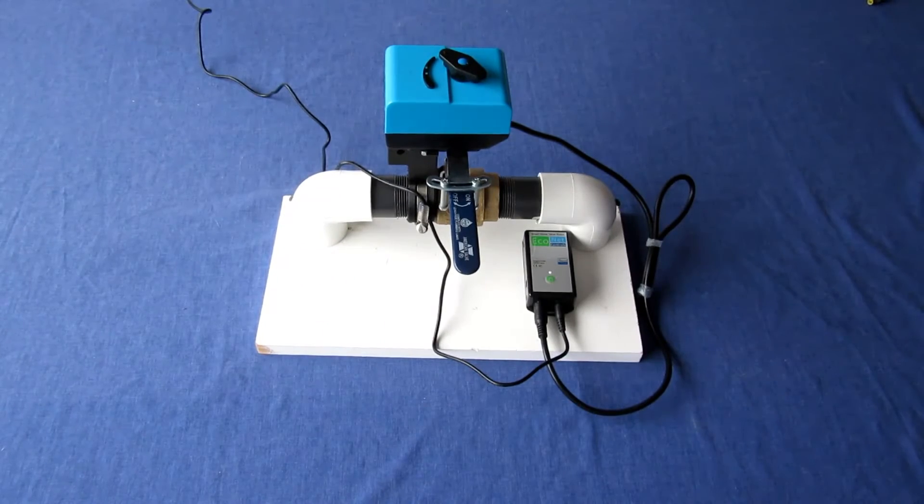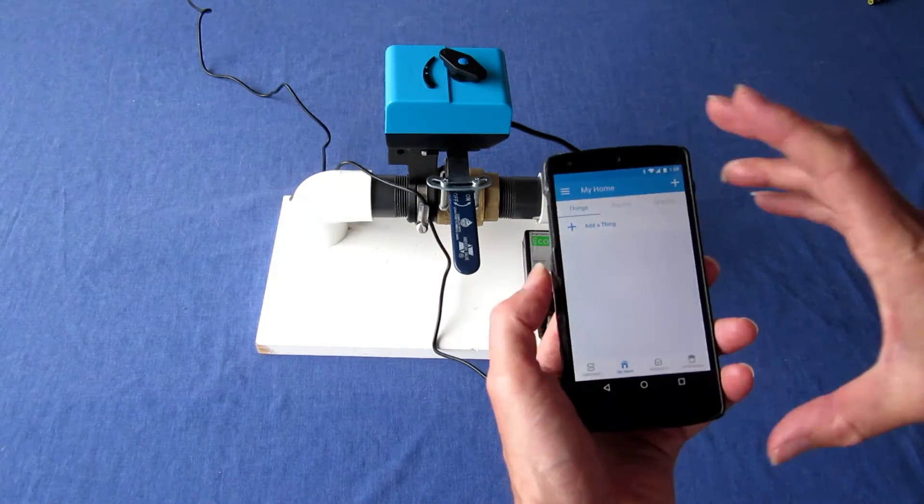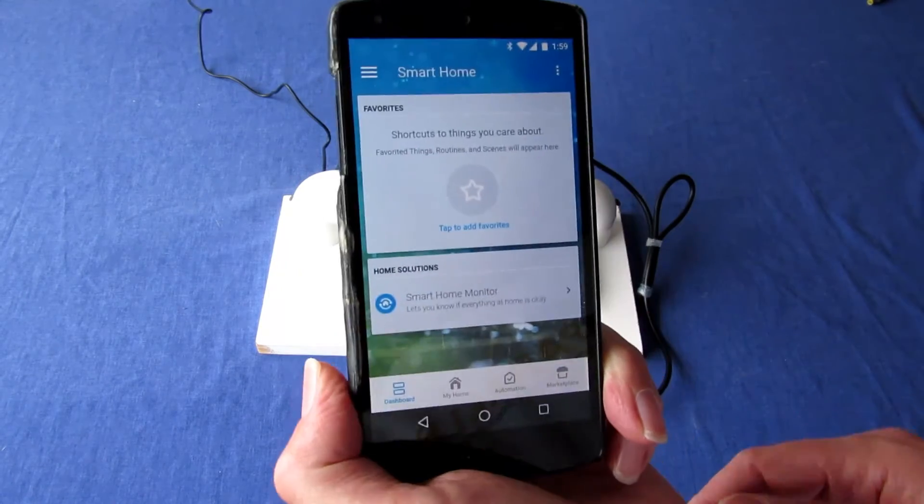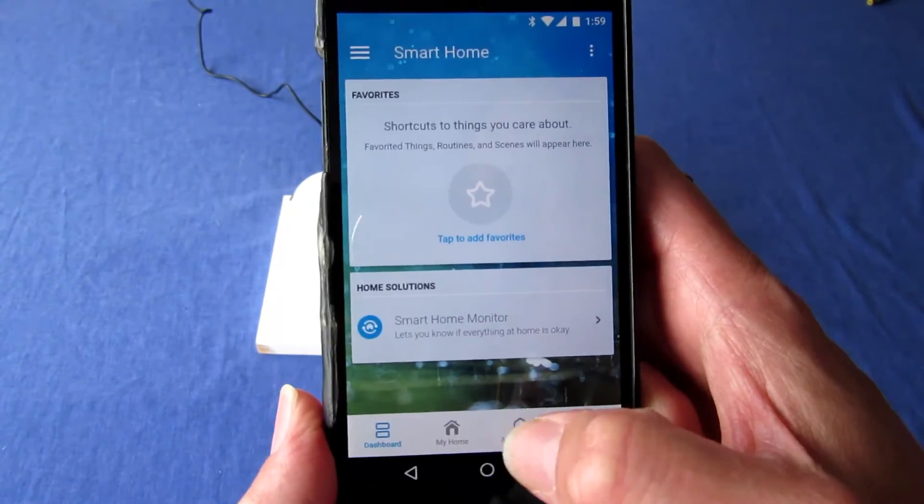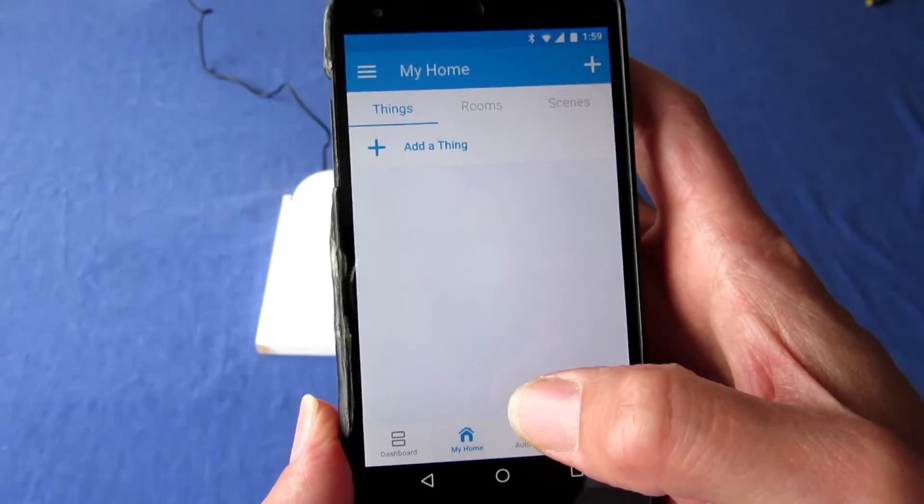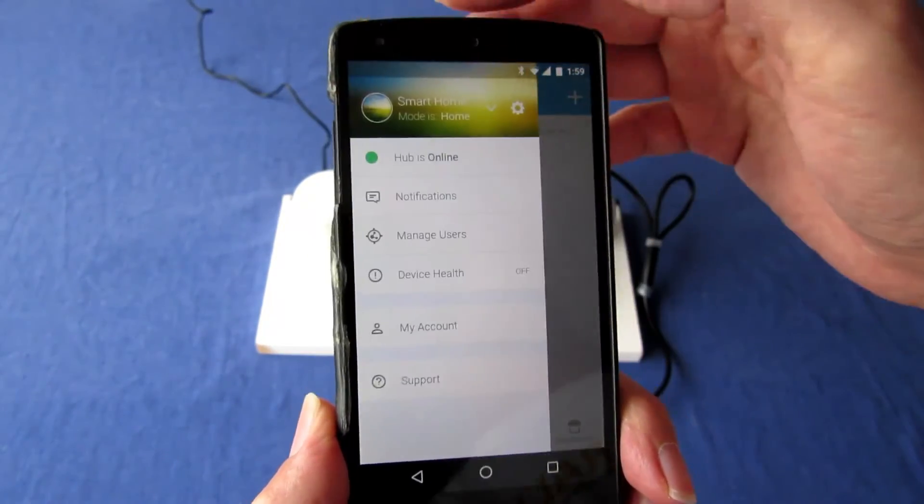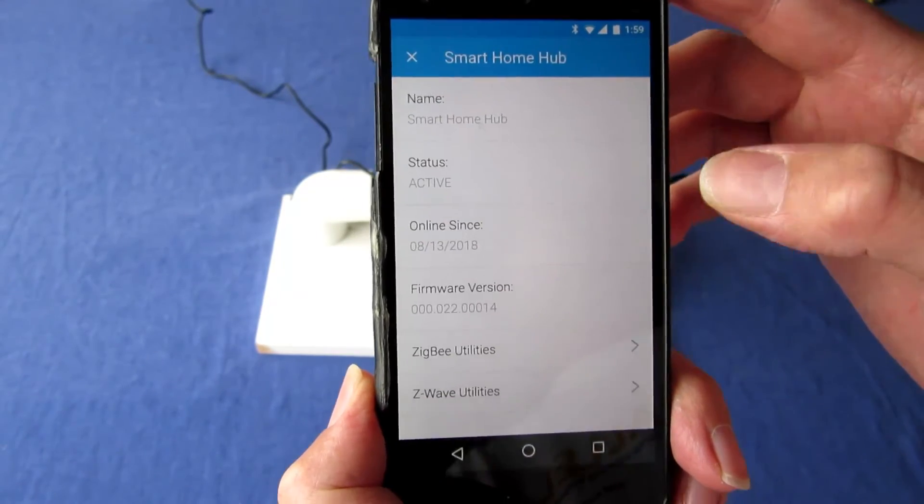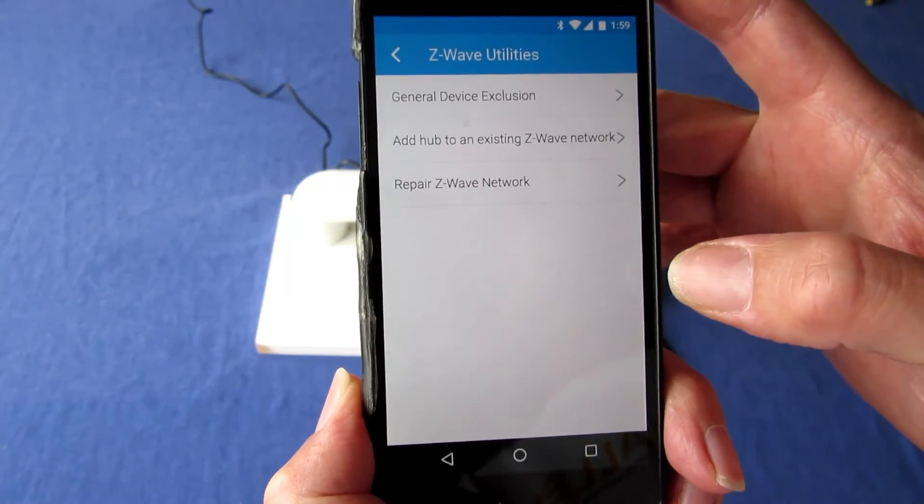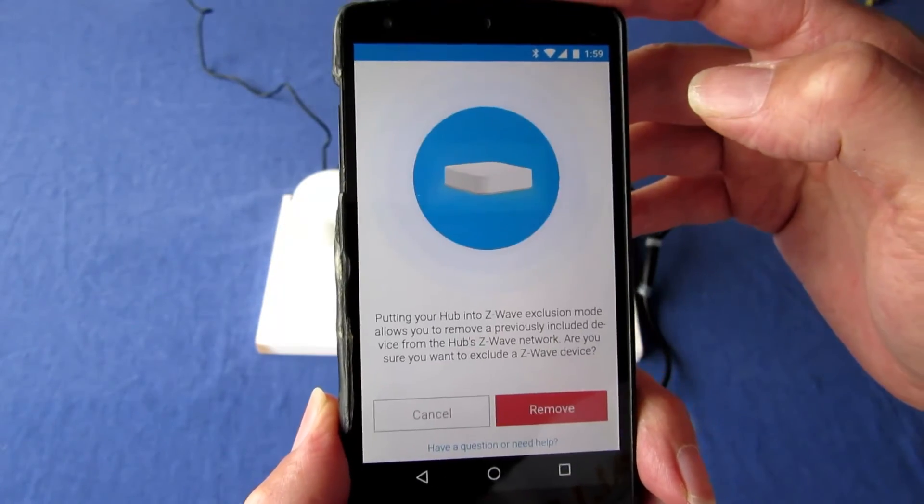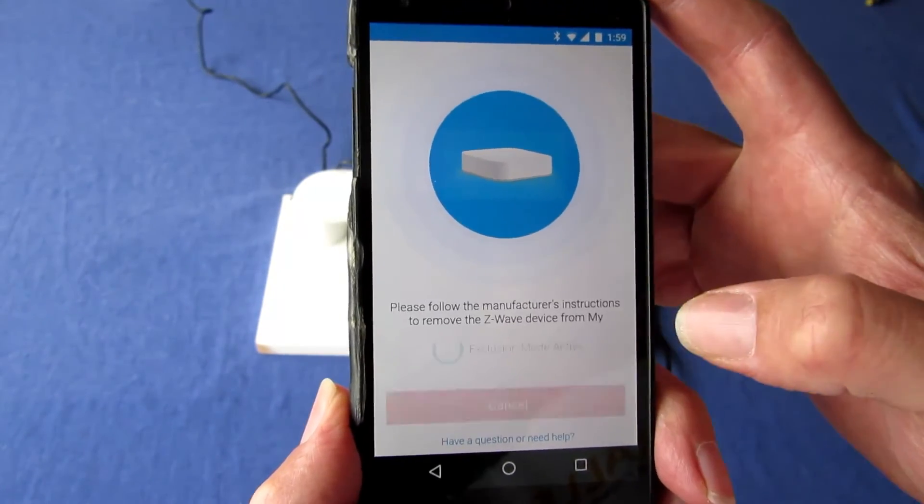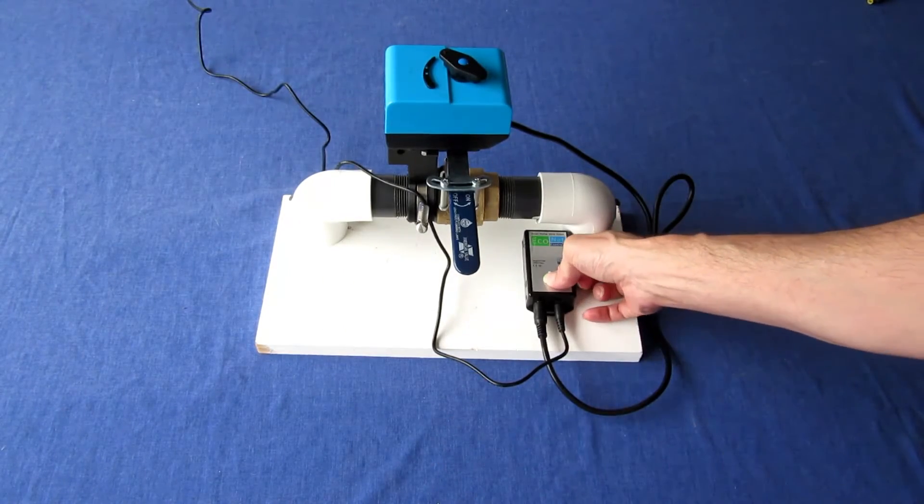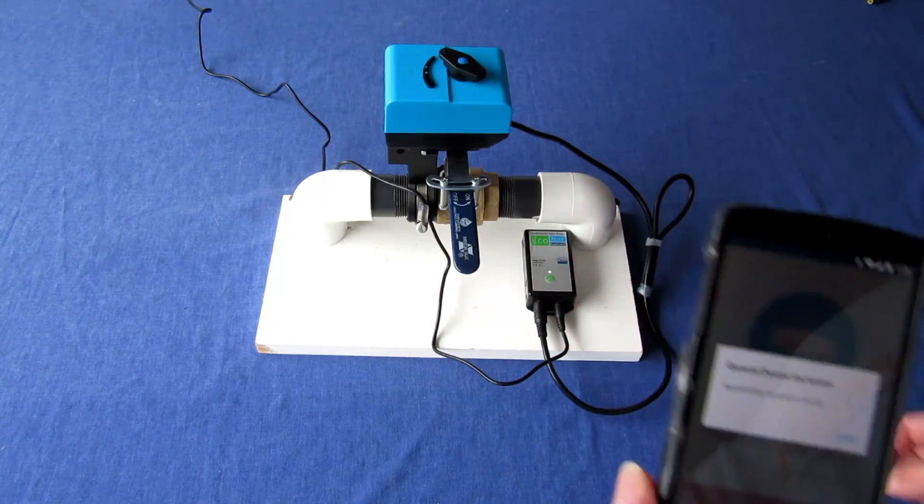To pair the Bulldog and other Z-Wave devices with a SmartThings Home Automation Hub, first you must remove the device from a blacklist that prevents unpaired devices from interacting with the hub. To do this, select the menu icon in the top left corner of the app. Select where it says Hub is online. Select Z-Wave Utilities, then General Device Exclusion. Tap the Remove button to put the SmartThings Hub into exclusion mode, then press the button on the Bulldog controller five or six times quickly.